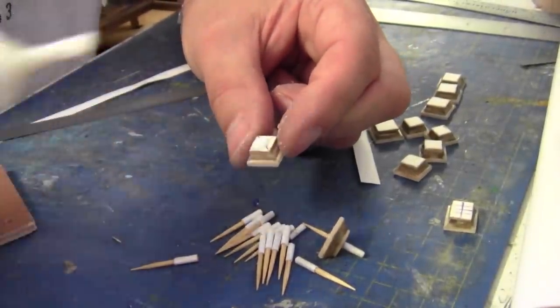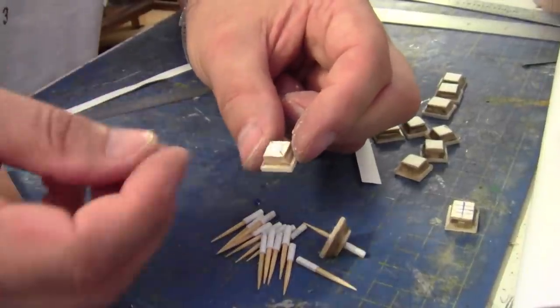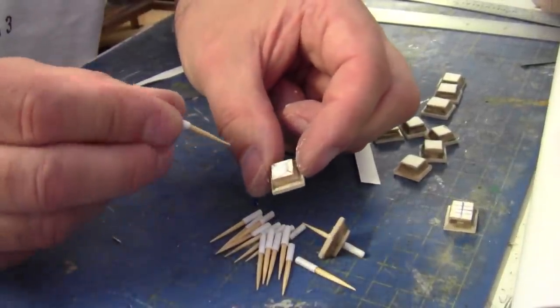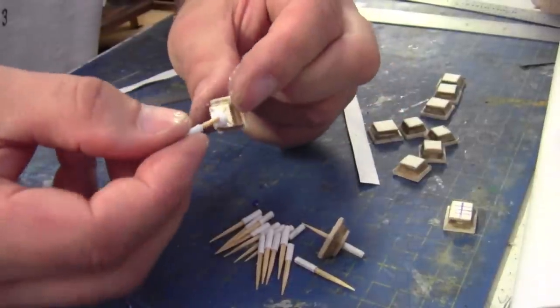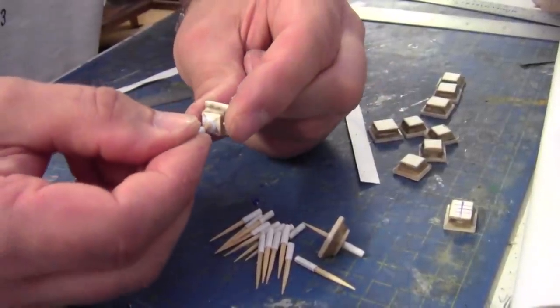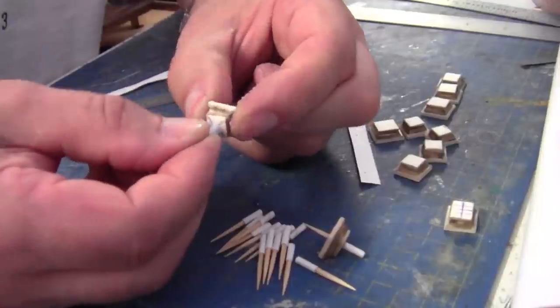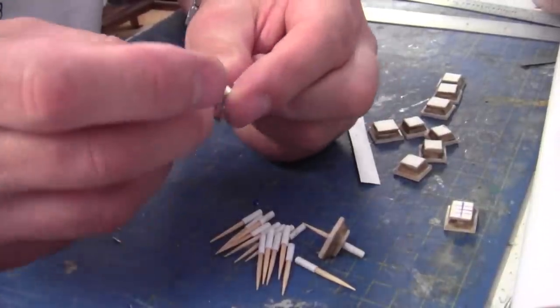Right, so getting back to what I was doing. It's just a case of putting a little bit of glue over the hole, getting your toothpick, and then just pushing it backwards and forwards until the glue comes right through to the bottom, like so.